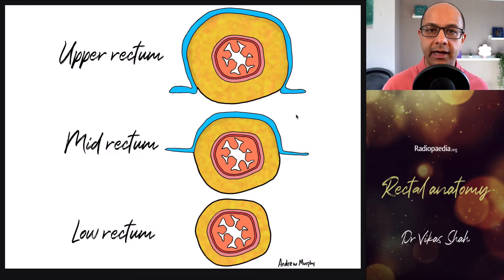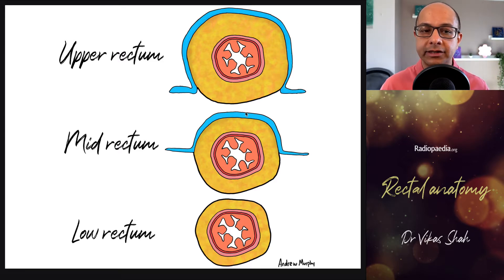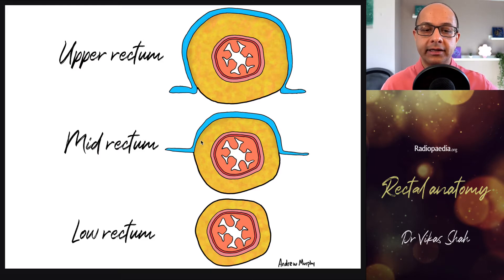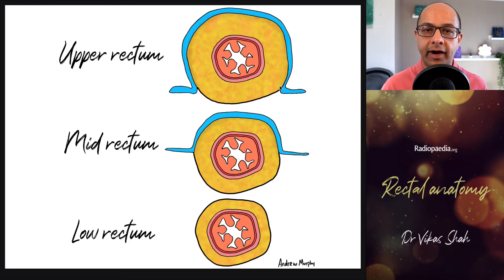The peritoneal reflection is really important when staging rectal cancers. Looking at axial slices through the upper, mid, and lower rectum, the lower rectum is entirely contained within the mesorectal compartment. Above the level of the peritoneal reflection — where the peritoneum reflects off the anterior part of the rectum — the anterior and lateral parts are variably and increasingly covered by peritoneum, with less mesorectal fascia forming the boundary.